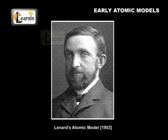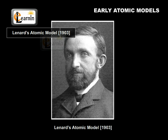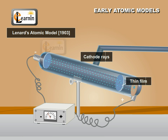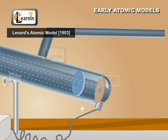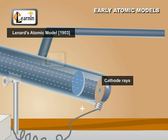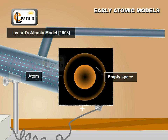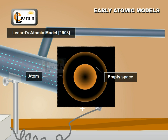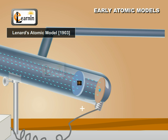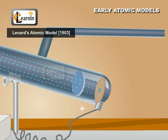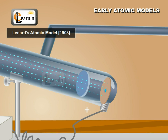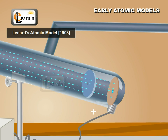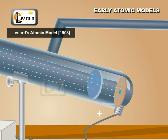Lennard studied the passage of cathode rays through a material in the form of thin film. He found that most of the cathode rays passed through. He concluded that the atom must have a lot of empty space in it. So, he proposed that atoms consist of electrons and similar tiny particles carrying positive charges. But he did not propose how they were held in the atom.